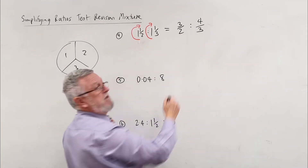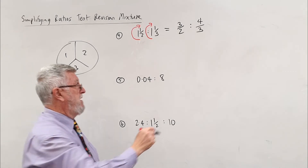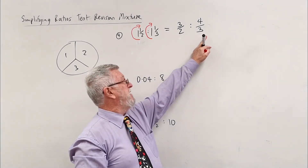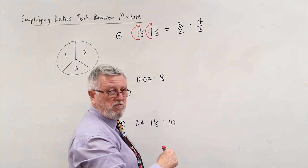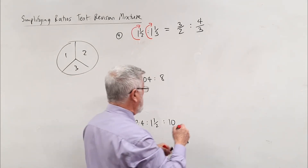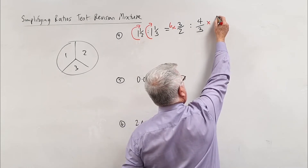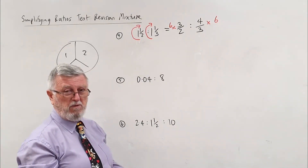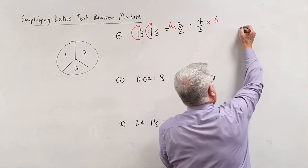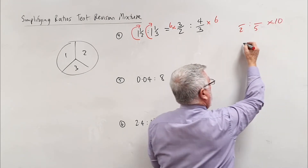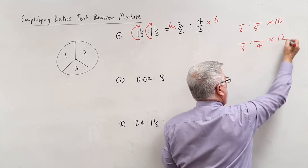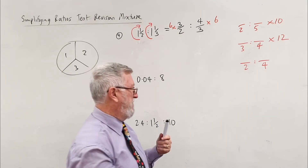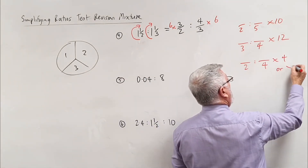Now we have 3/2 to 4/3, and it's the annoying part. If I multiply both sides by two I can clear the half; if I multiply both by three I can clear the third. The shortcut is: what do two and three both fit into? Six. So I'll multiply both sides by six. You could also multiply by two and then by three separately — the nice shortcut is multiplying by six. For other denominators: two and five, multiply by ten; three and four, multiply by twelve.